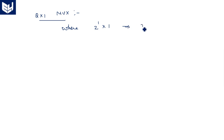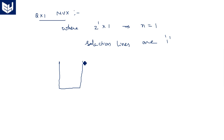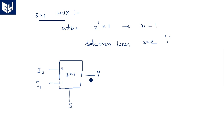For the 2 by 1 multiplexer, the size is 2 power 1, so n equals 1 — meaning there is only 1 selection line. It has 2 inputs: i0 and i1, with locations 0 and 1. There is only 1 selection line s, and along with that we also have an enable pin.